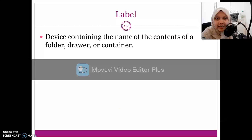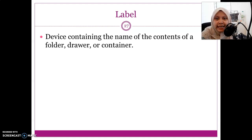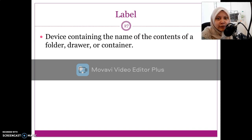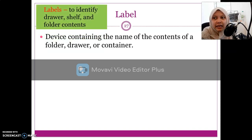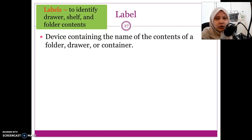The next element of supplies in filing and storage is the label. A label is a device containing the name of the contents of a folder, drawer, or container. Labels are used to identify the drawer, the shelf, and also the folder content.